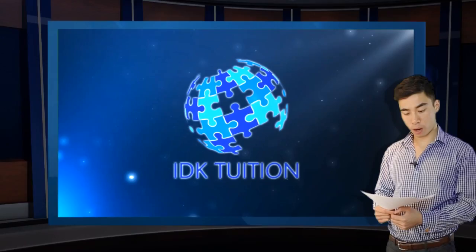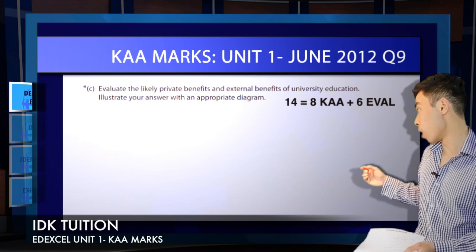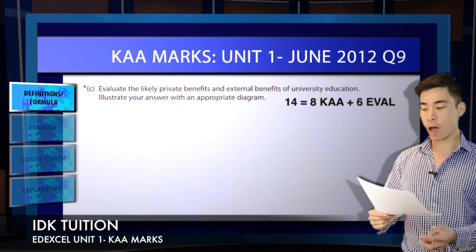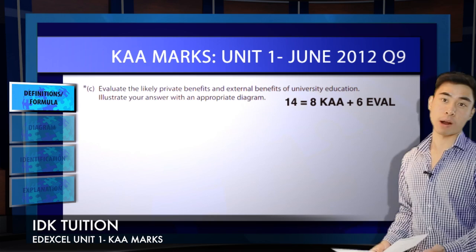Part C is a 14-marker — a KAA plus evaluation question. Remember, you'll always have less than 50% of marks available for evaluation, so it's an eight-six split for a 14-marker. Looking at KAA marks, we have eight on offer. The question says 'evaluate the likely private benefits and external benefits of university education — illustrate your answer with an appropriate diagram.' So there are clear prompts for how to pick up your KAA marks.